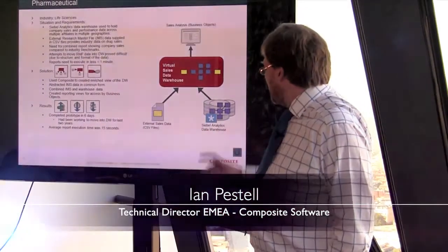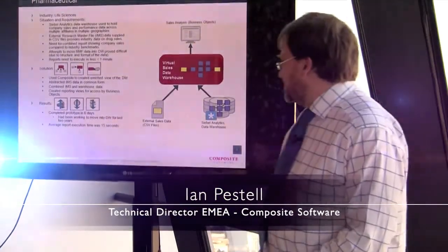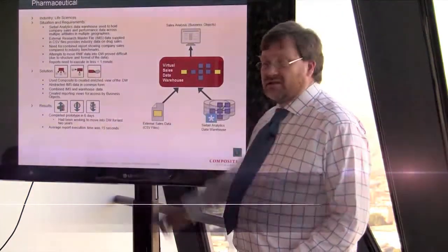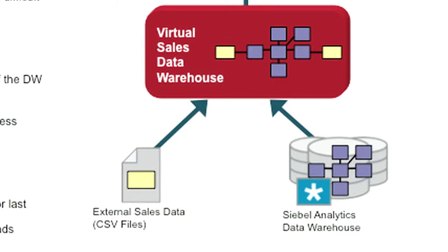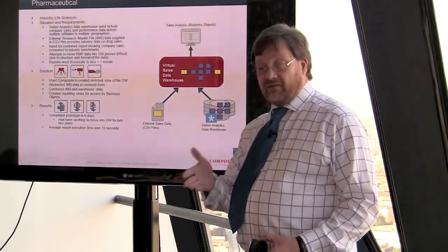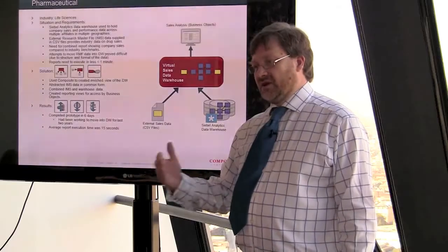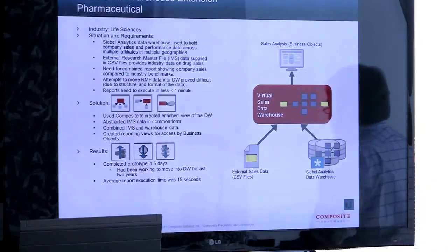This particular customer had a whole load of sales data in a Siebel Analytics warehouse. They subscribed to a service called IMS, where they get the sales data for the whole of the pharmaceutical industry. If they could link the two together, they could see their sales in context of the whole industry. The problem is the file they get back from IMS is in a very odd format — 24 months' worth of rolling data that needs to be pivoted. They get a new file every month and tried several ways of getting that into the data warehouse, but it proved difficult.